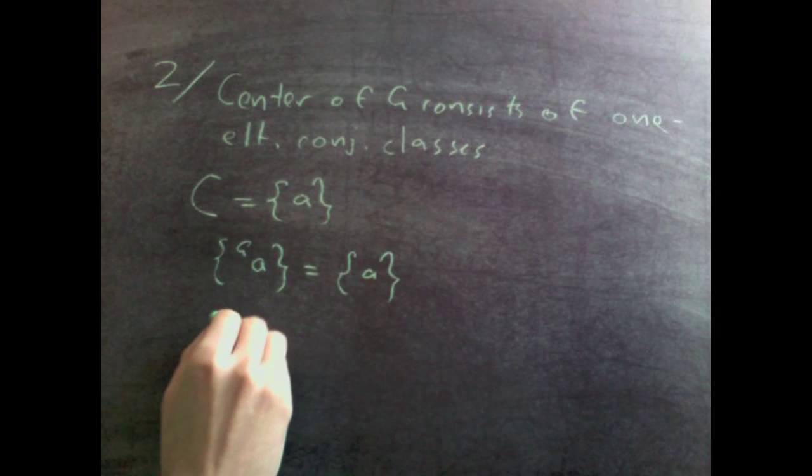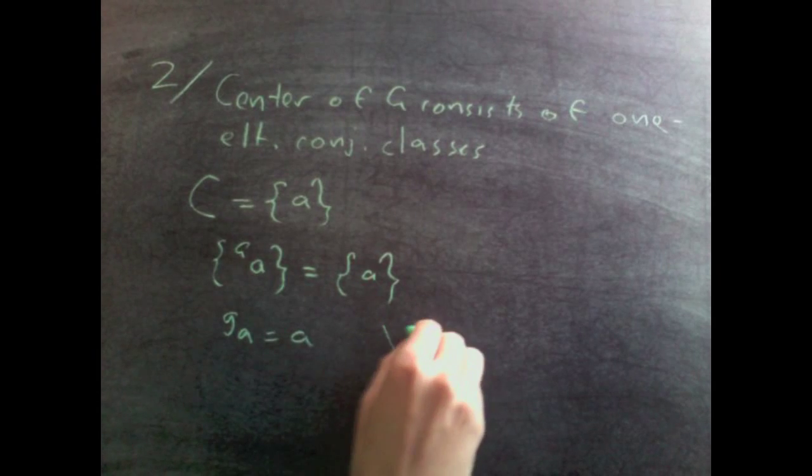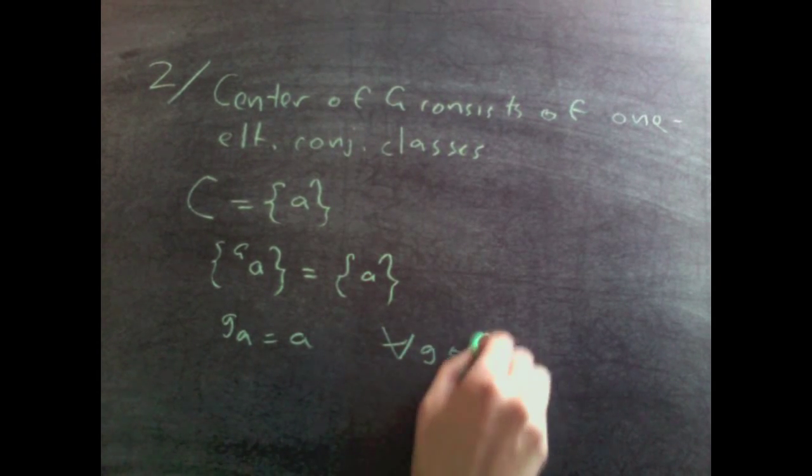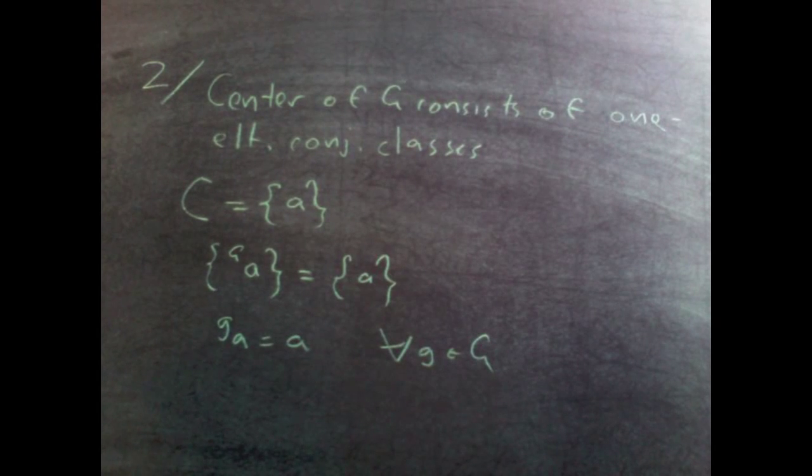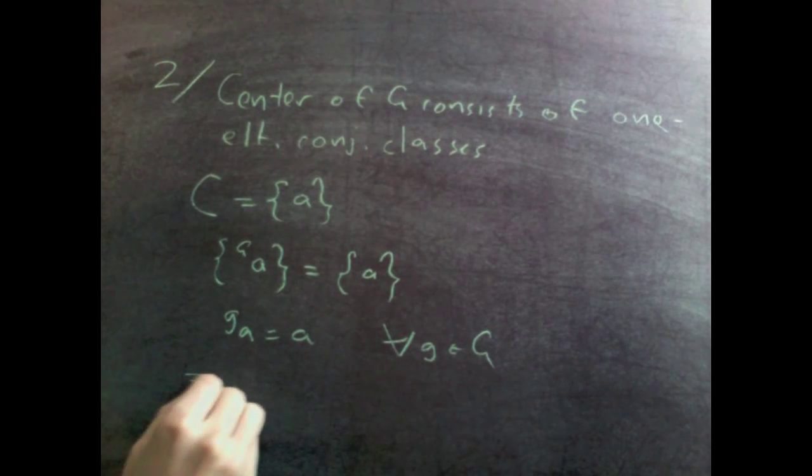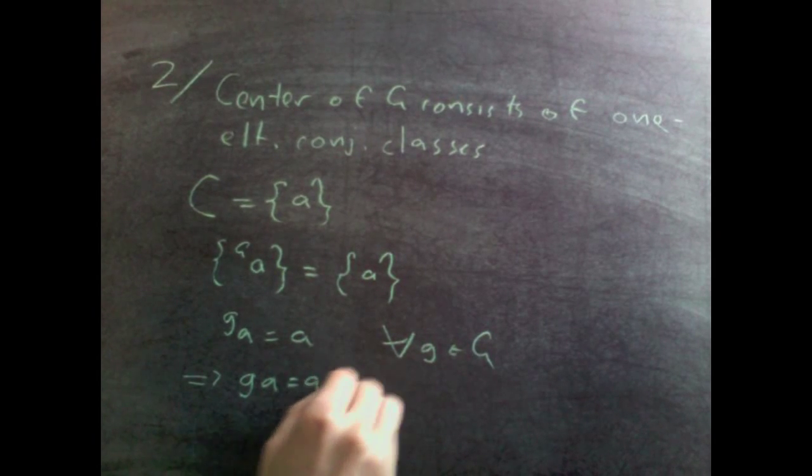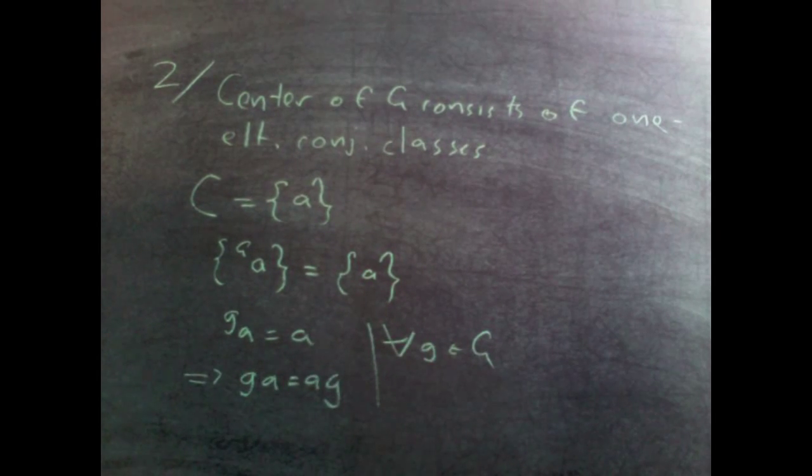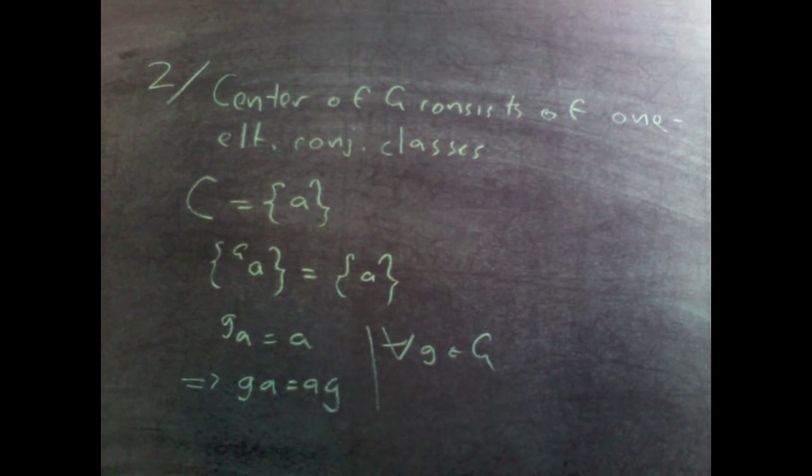So this statement just means that the conjugate of a is a for all g in g. Which means that g a equals a g for all g in g. In other words, a is a central element of g.